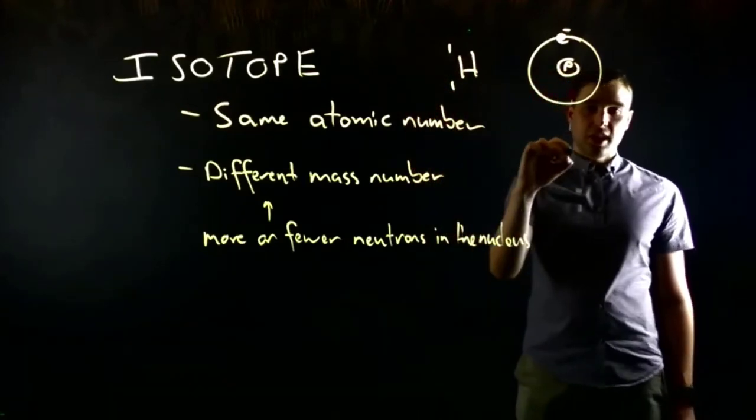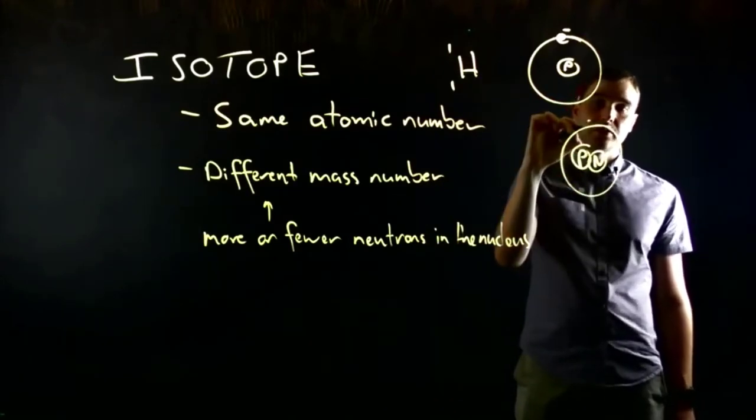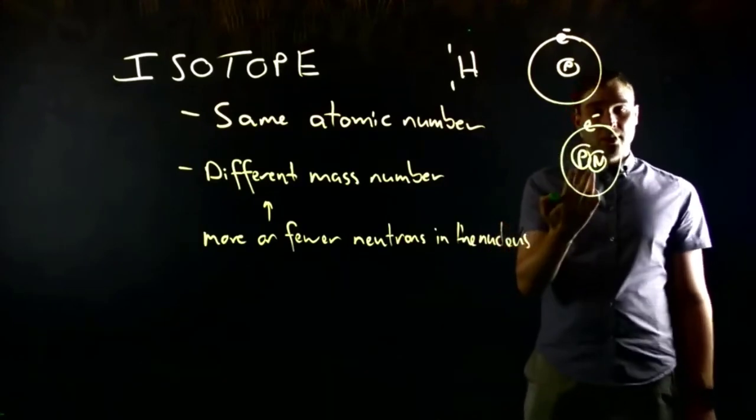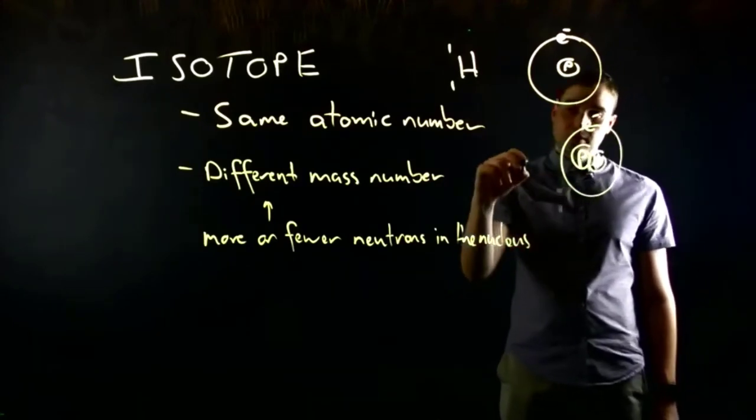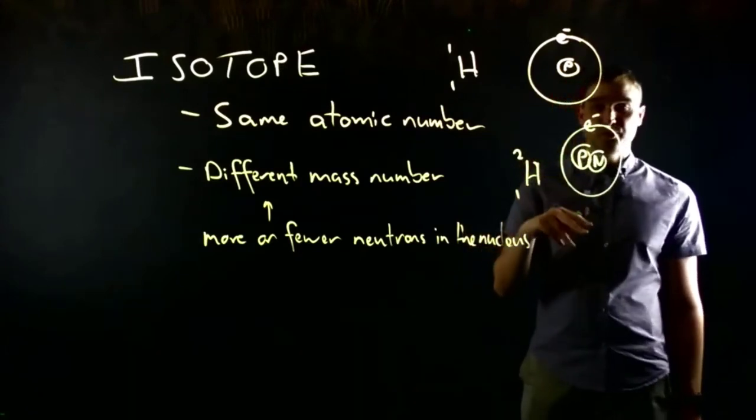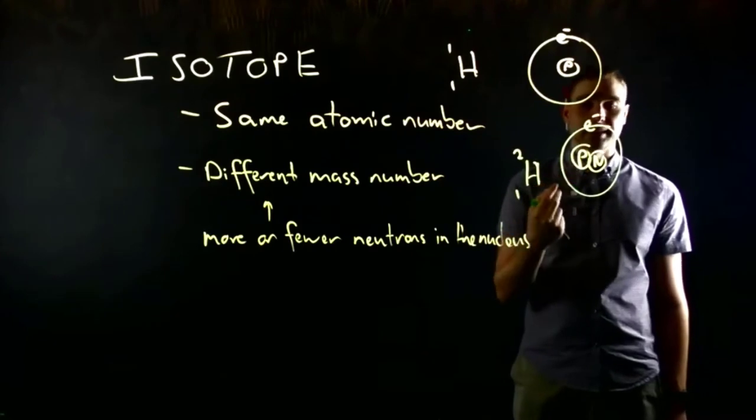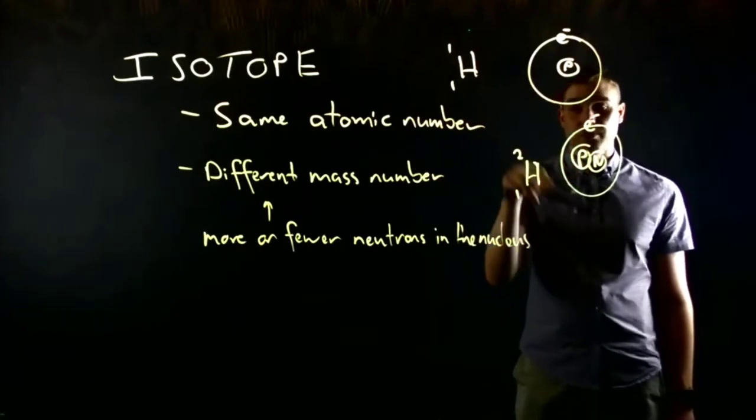Some hydrogen has a proton and a neutron in the nucleus. Again, one electron flying around. So this has a proton and a neutron, so it has extra mass in the nucleus. The atomic mass of this will be twice as much because the mass of protons and neutrons are around about the same. So this is hydrogen-2.